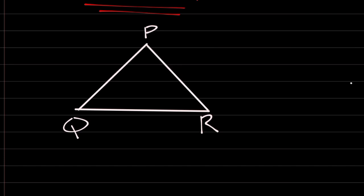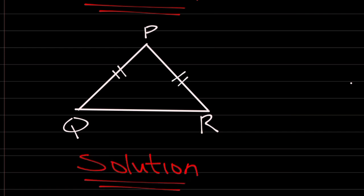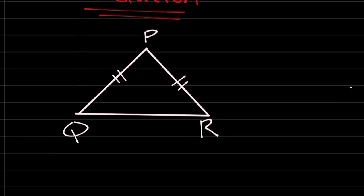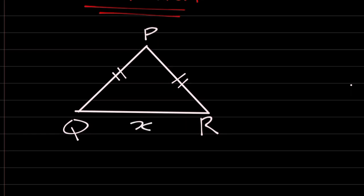The question says that point P is always equidistant from point Q and point R. It means the distance between PQ and PR are equal. Find QR. Where is QR? So find here, let's call it X.